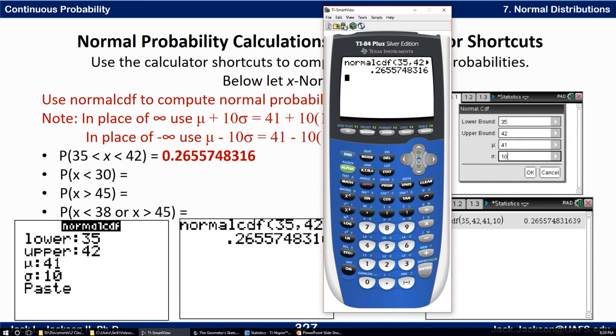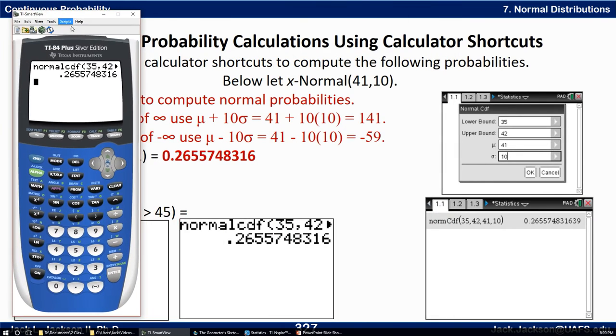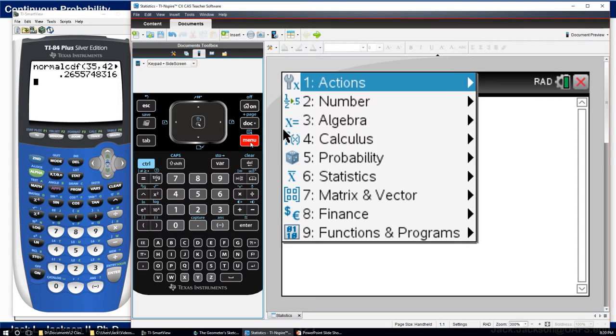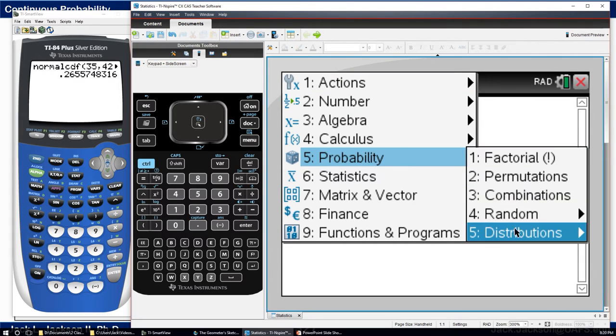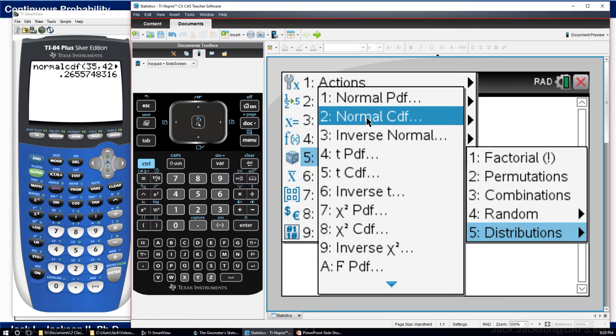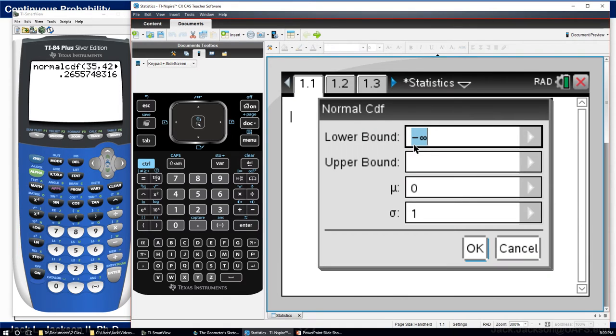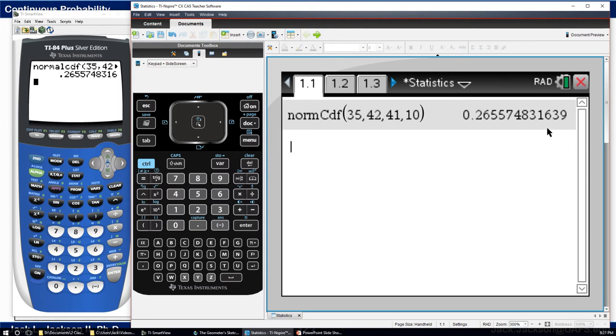Same way on the Inspire. Go to menu, go to probability distributions, we want number two the normalcdf. We put the lower bound here which in this case was 35, the upper was 42, the mean was 41 and the standard deviation was 10 and click OK and there it is, there's the answer.